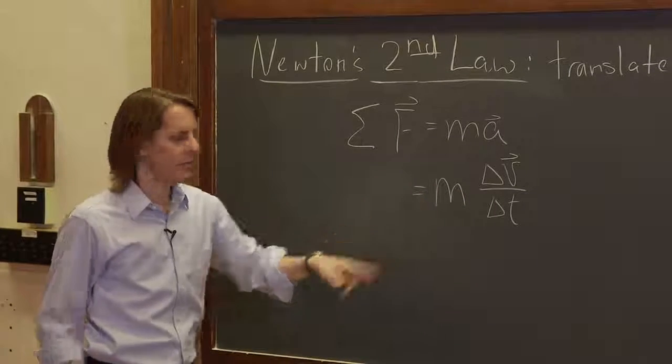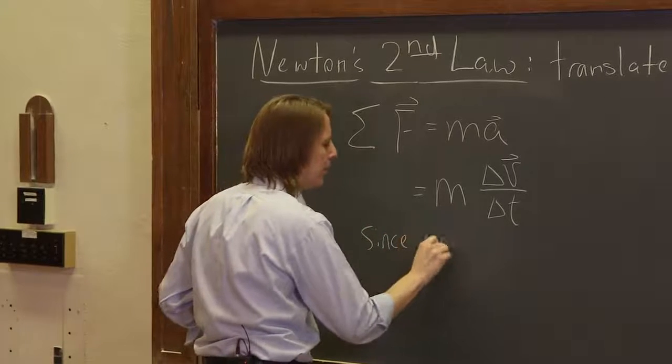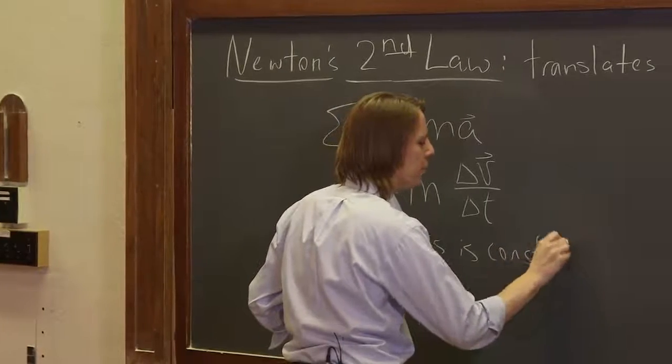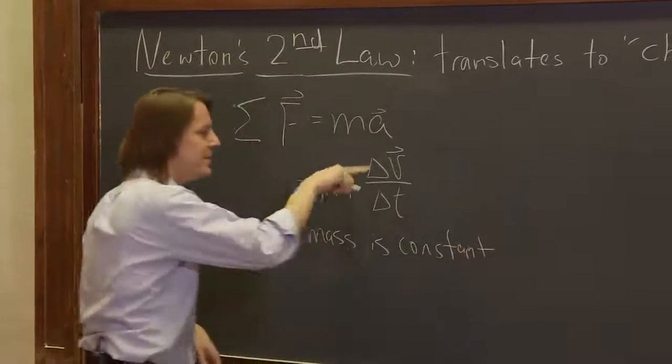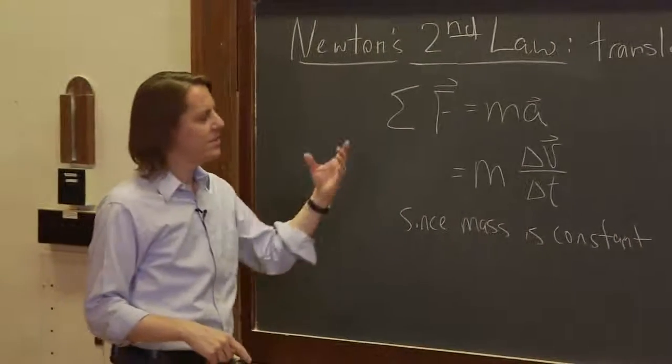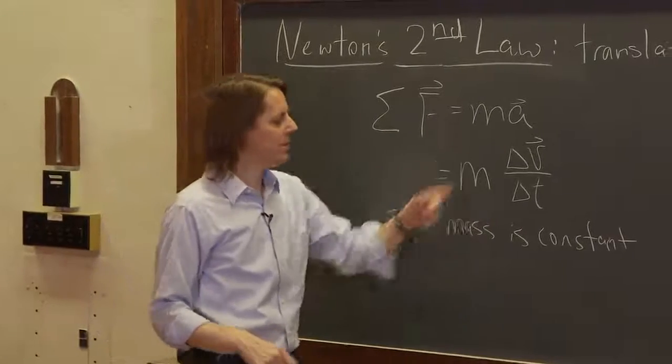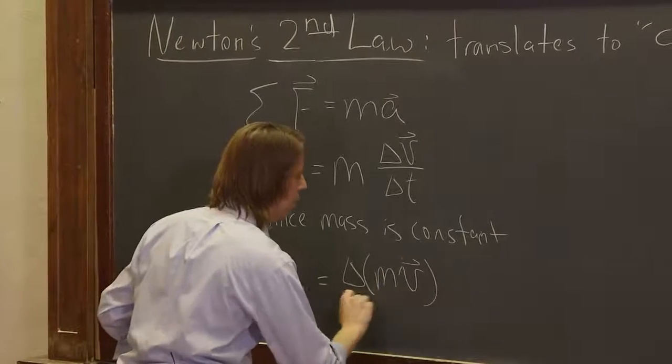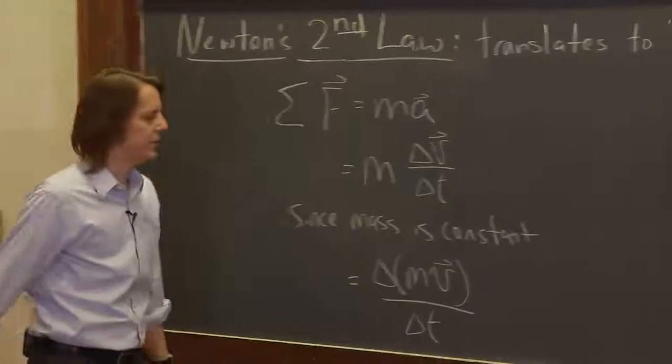Mass is constant. So since mass is constant, you could basically put the mass inside the delta. The change in v, or you could just bring the m in and say it's equal to the delta of m times v, delta t.